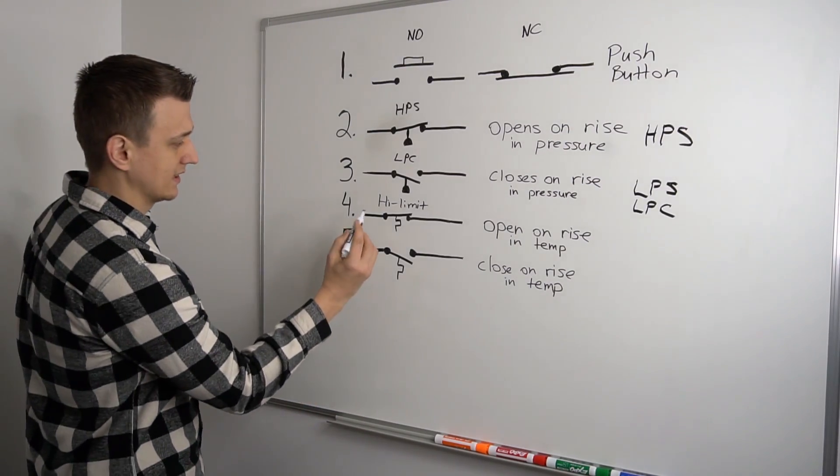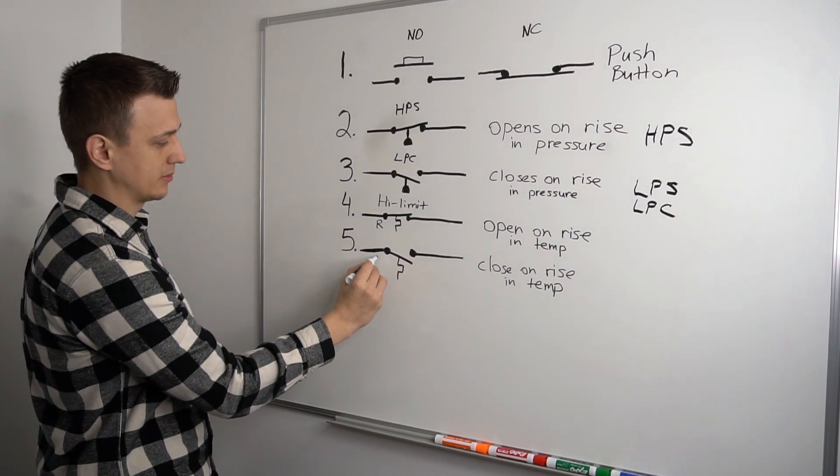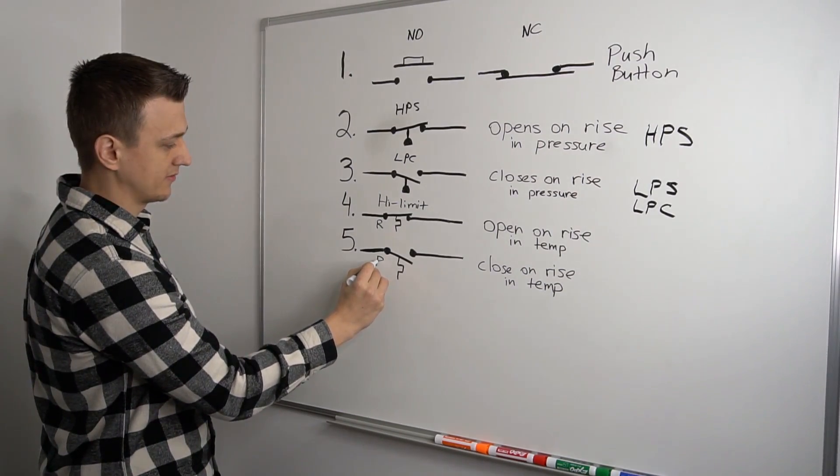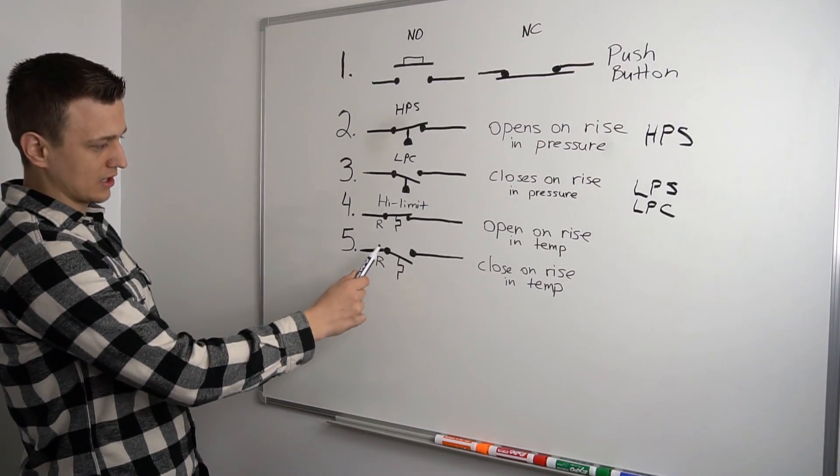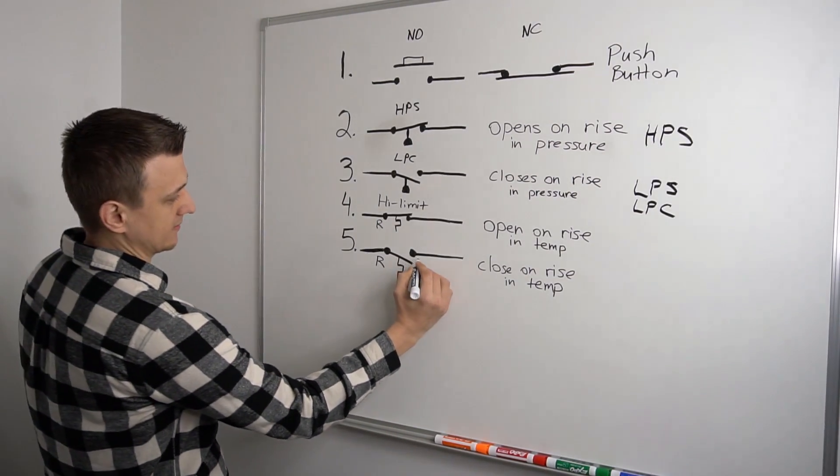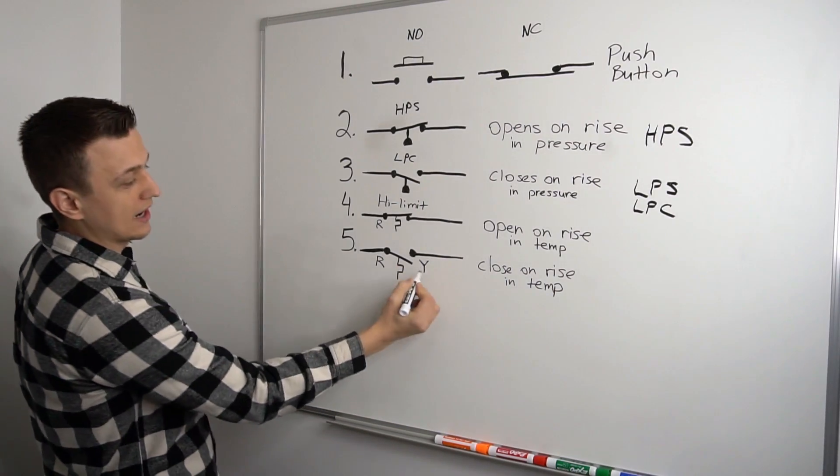So let's say this is R right here on the thermostat. This is power coming in to the thermostat, right? From the control board in the furnace. So it's getting 24 volts, the thermostat is. And this switch right here would be used for cooling. And let me explain why.